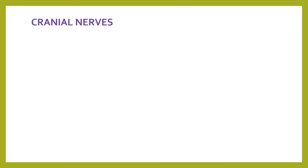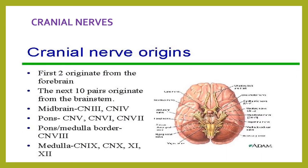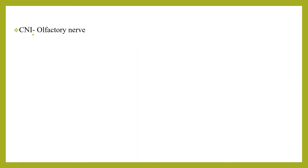The second component is cranial nerve examination. In infants and young children, most cranial nerves can be assessed, though strict numerical order can be overlooked. There are 12 cranial nerves: the first two originate from the forebrain; cranial nerves three and four from the midbrain; five, six, and seven from the pons; eight from the pons-medulla border; and nine, ten, eleven, and twelve from the medulla.